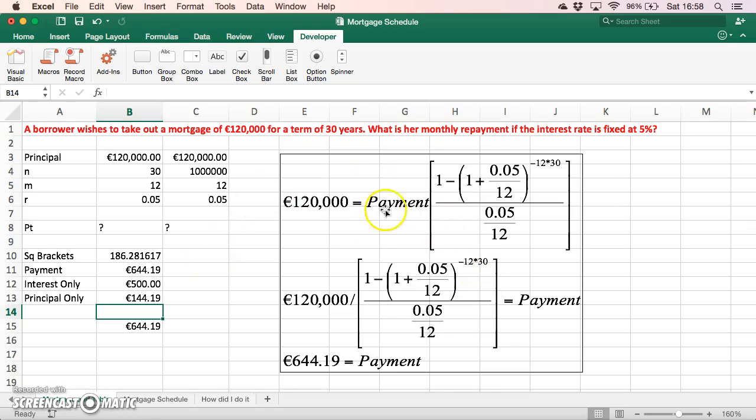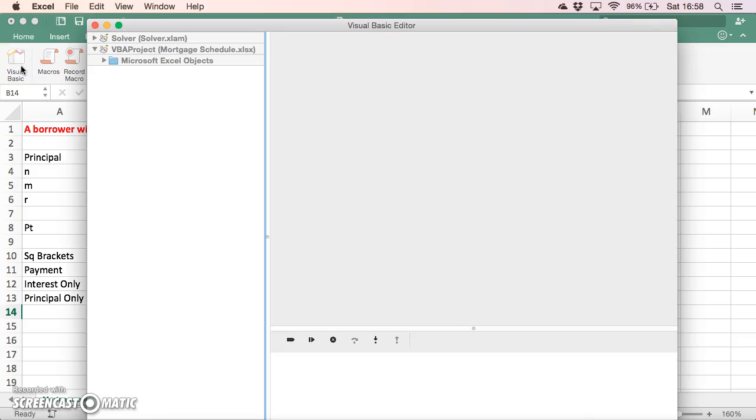To set this out as a VBA function, we can go into Visual Basic. This is the latest Office application for Excel on the Mac, so it's slightly different in its configuration. We insert a module and open that module.